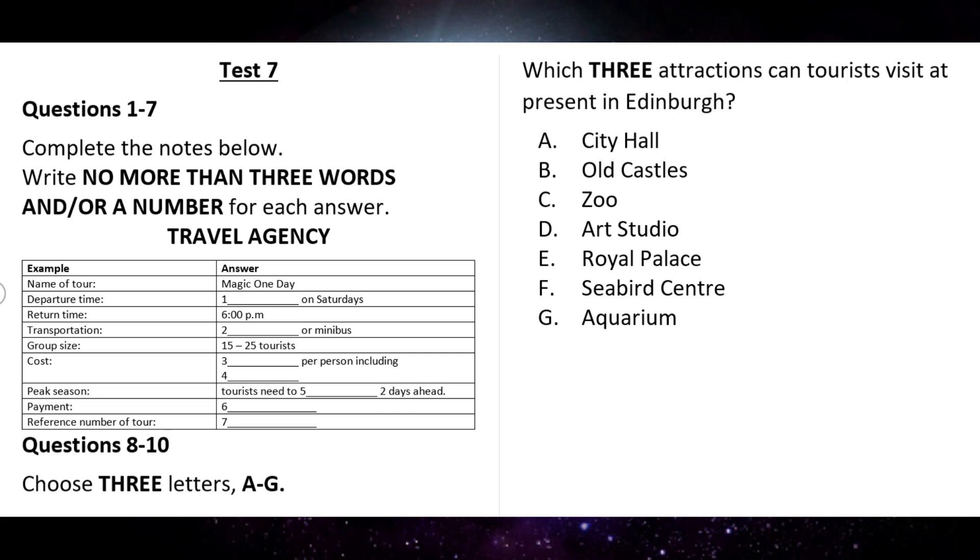And then we will go on to St Giles's Cathedral with 1,000 years of history. It is renowned for its stained glass, regal organ and beautiful thistle chapel. Great. Is it near to the zoo? Yes. After lunch you will visit Royal Palace. It is a good place to know about Royal Family's life, but it has a rule with no photo. Right.